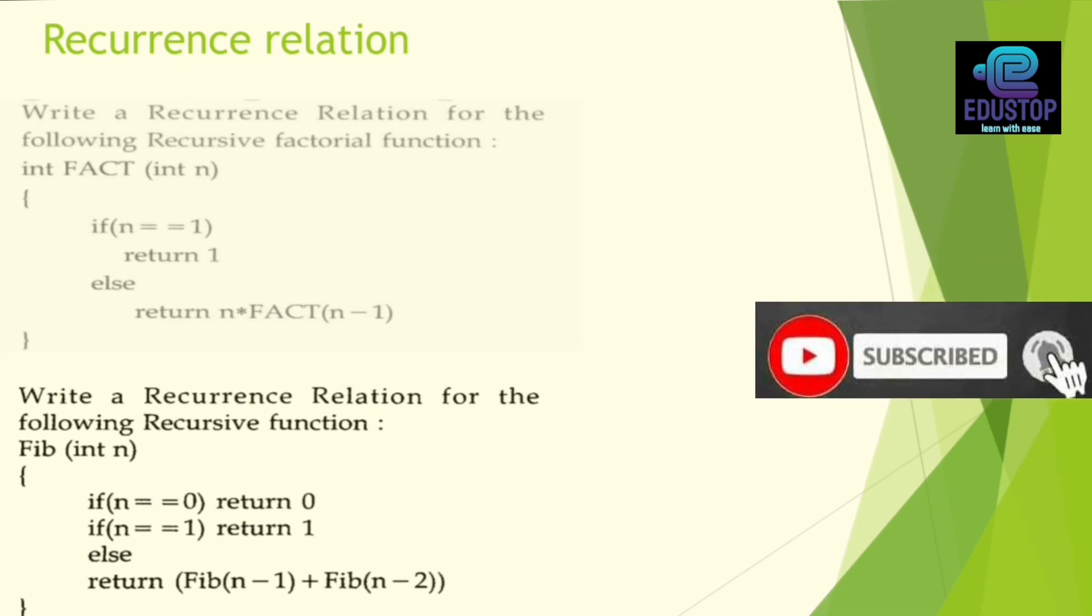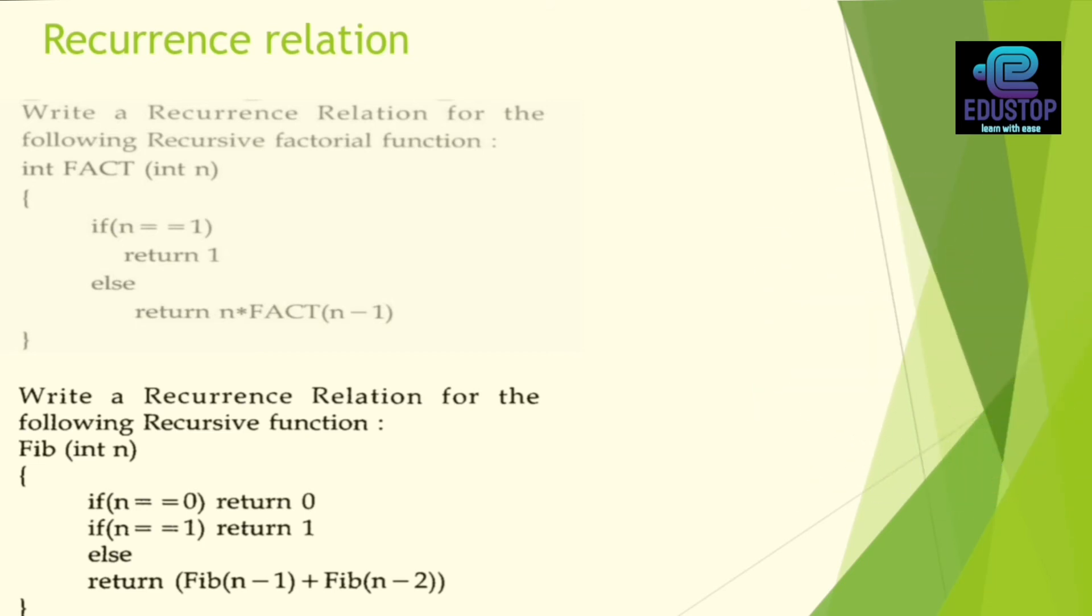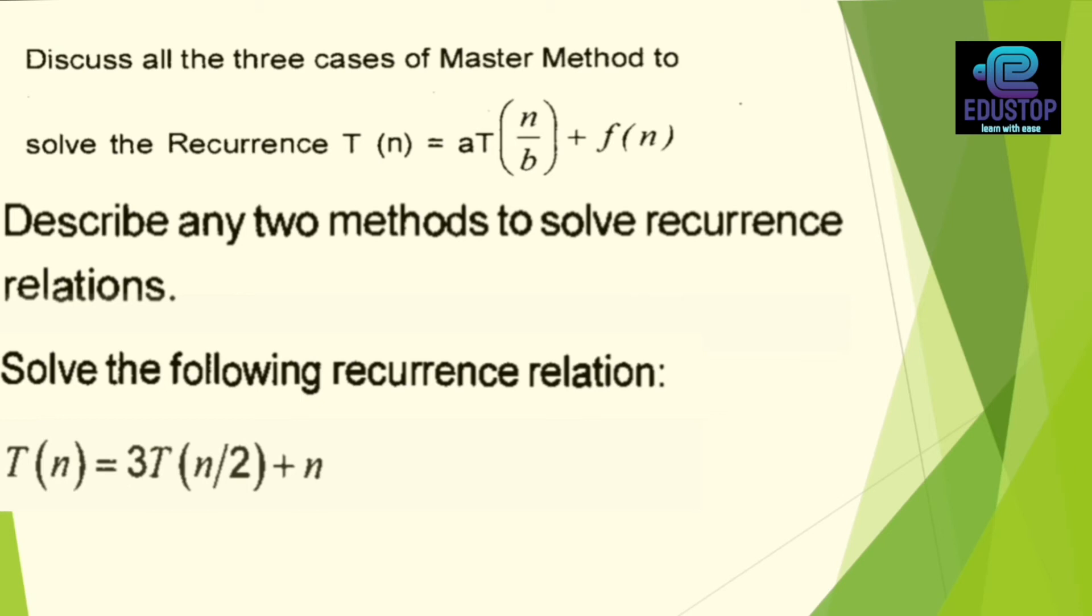Next, there is a very important question in your recurrence relation, so you have to prepare this question. There is a question in factorial and Fibonacci series. There is a code written here, so you have to find out the recurrence relation. Sometimes it is possible that you don't have the code, I have a note down here. There is a code written here and then you have to find out the recurrence relation. Next, there are questions in your recurrence. Discuss all the three cases of master method to solve the recurrence. For which of the recurrence are the three cases? We have to discuss the next question. The next question is the same way, but the style is different.